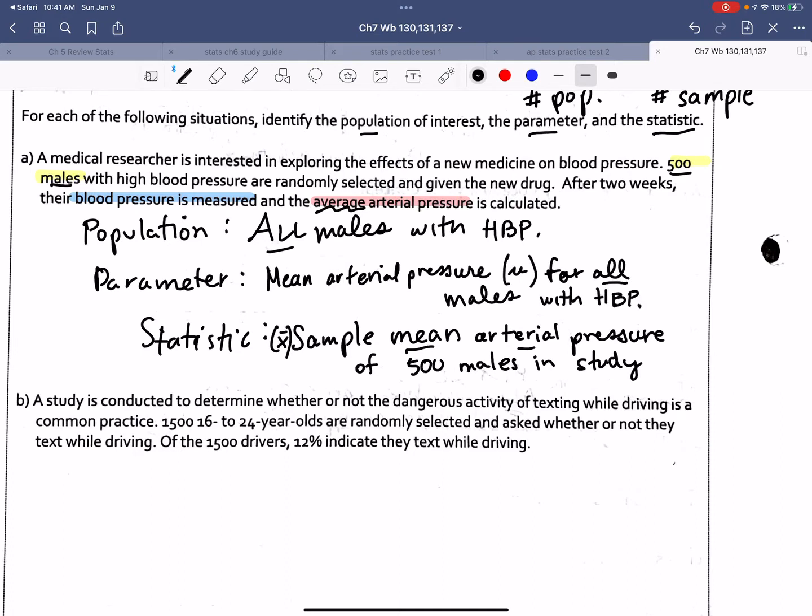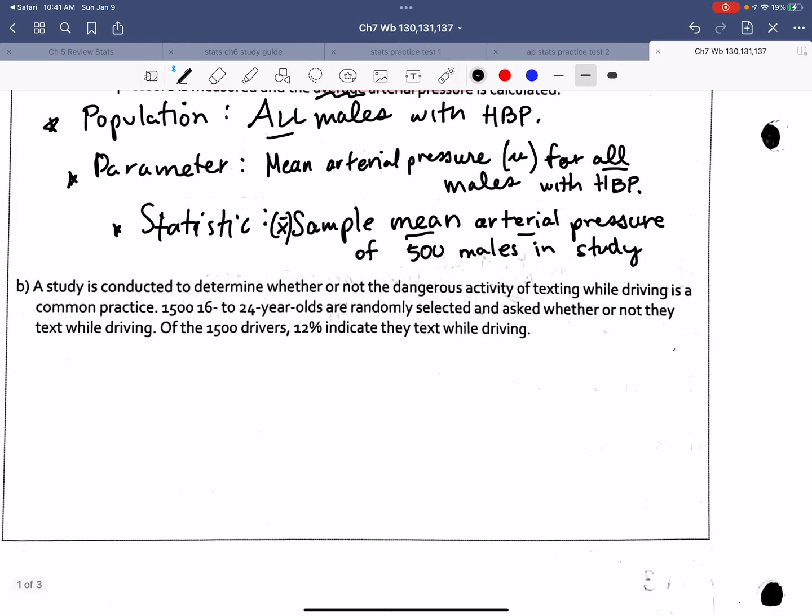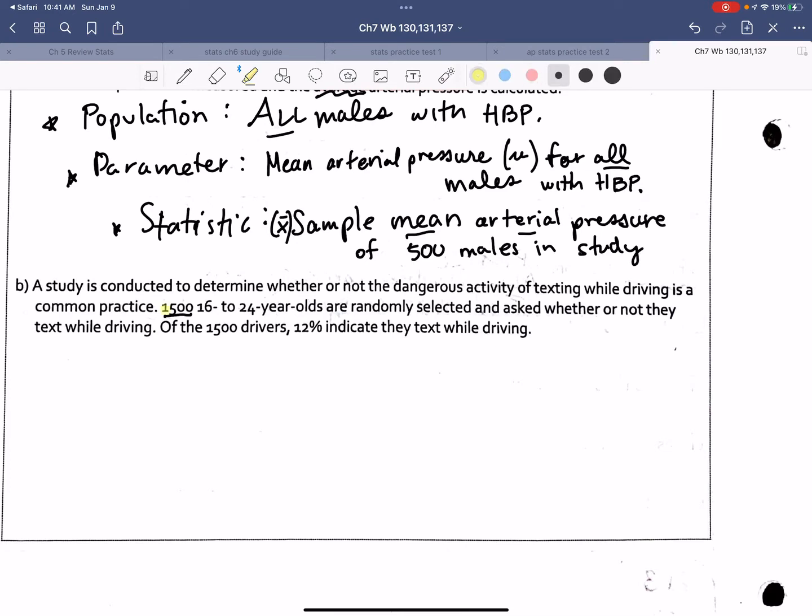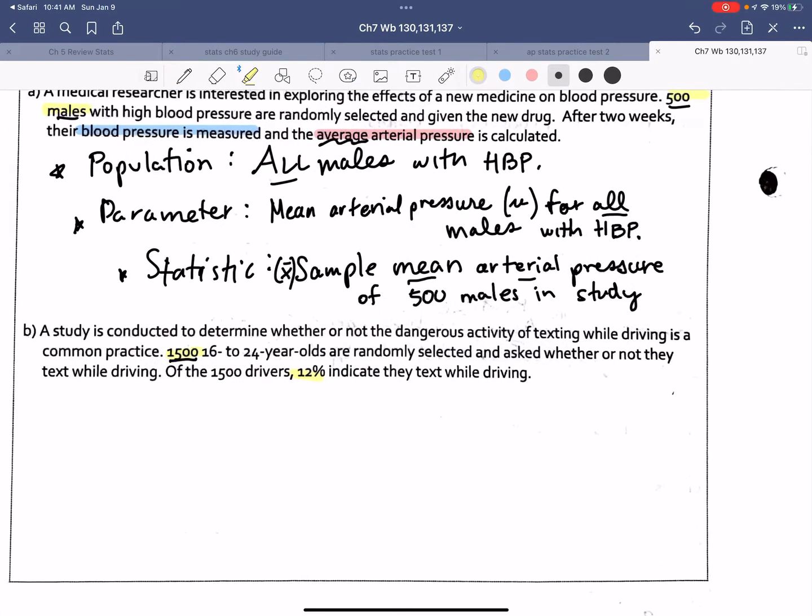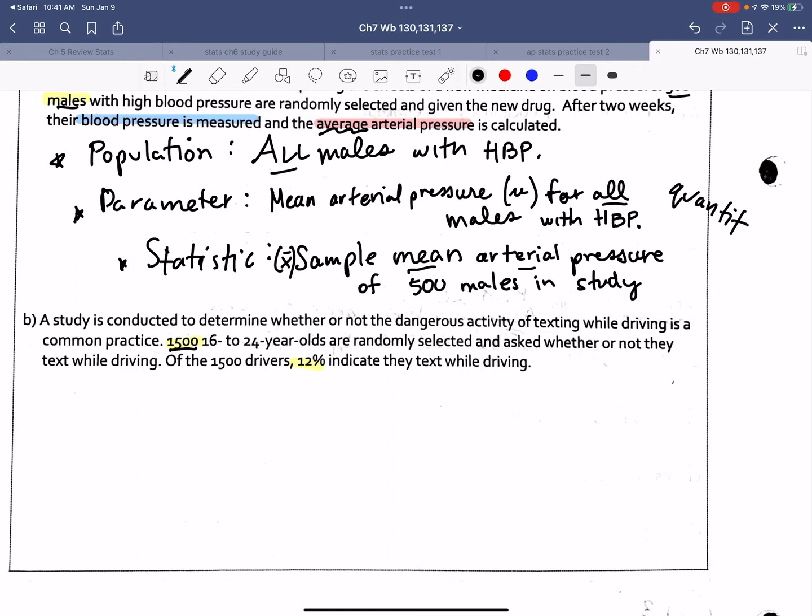So we normally wouldn't have to write these out. We'd see these types of questions in multiple choice, but we have to know what it is we're setting up, what it is we're asking, and how it is we're taking a sample to go about to make an inference about what we're asking. Question number two. A study is conducted to determine whether or not the dangerous activity of texting while driving is common. In 1500, so that's my sample. In 1500 people, 16 to 24, that were randomly selected, they were asked whether or not they text while driving.